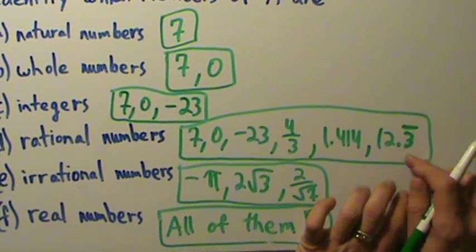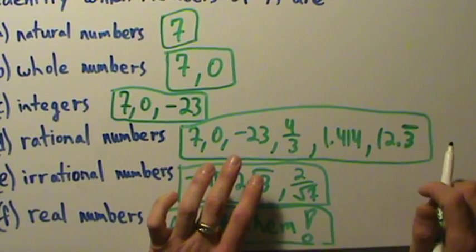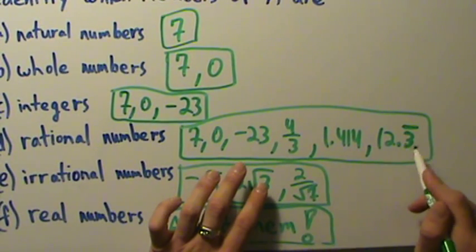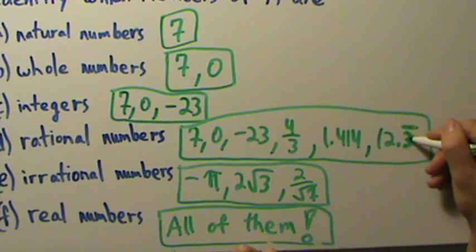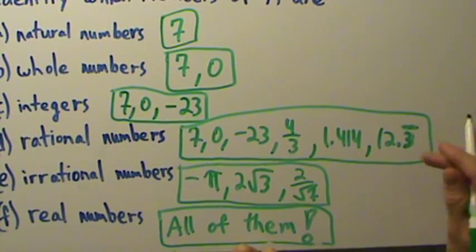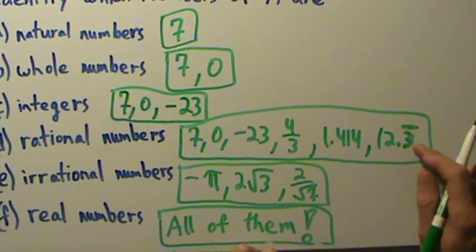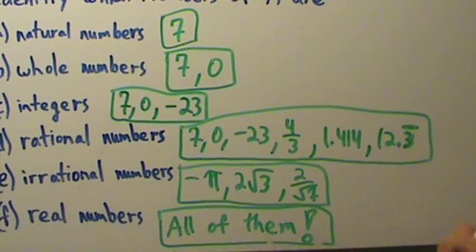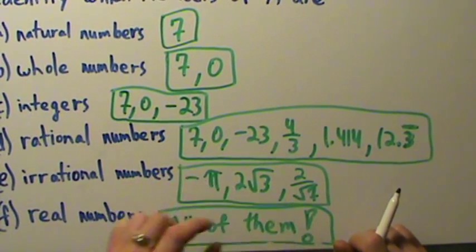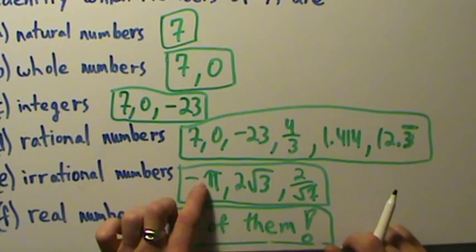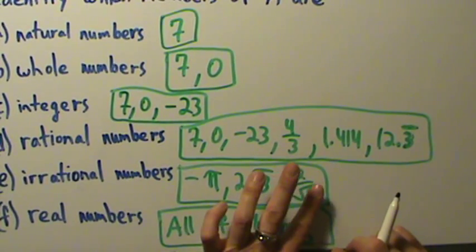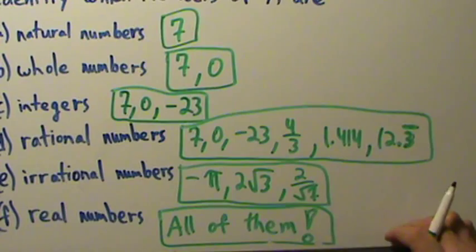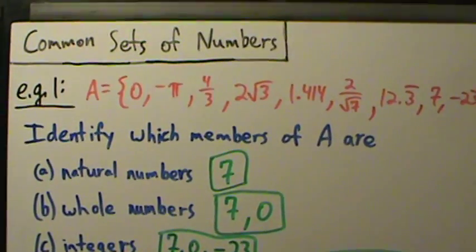12.3 repeating — it's also possible to express this as a ratio of two integers, though it's a little tricky, but the point is we can do it, and since we can, it makes this a rational number. The subtle difference to point out: if you have infinitely many places after the decimal and it repeats, that's rational. If it has infinitely many places after the decimal but does not repeat — like negative pi, two root three, two divided by root seven — then that's irrational. So just be careful about that. That's example one with identifying different types of numbers.